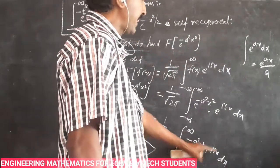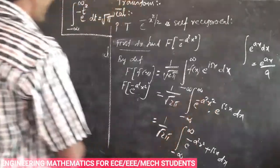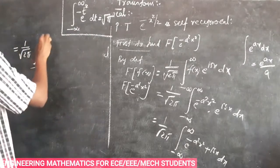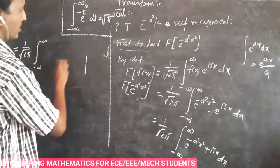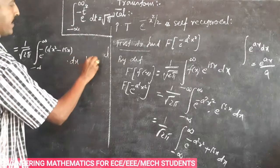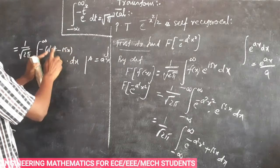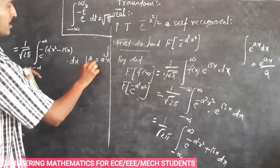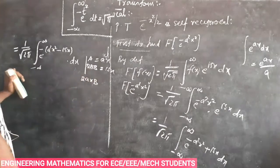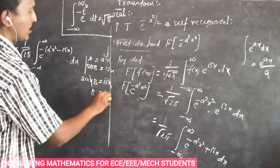We have e power minus a squared x squared plus i s x. We convert this to completing the square form. We take a equal to a x, so 2 a b equals i s x, which gives 2 a x b equals i s x. Cancelling x, b equals i s by 2 a. So the integral becomes 1 by root of 2 pi, integral from minus infinity to plus infinity of e power minus of a squared x squared minus 2 a b.